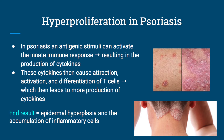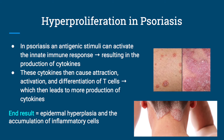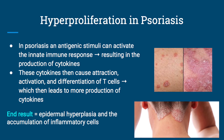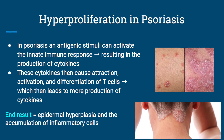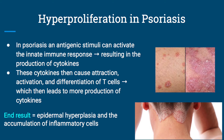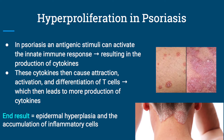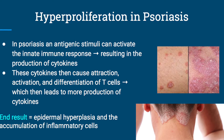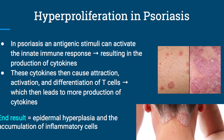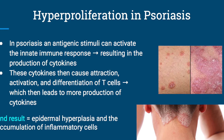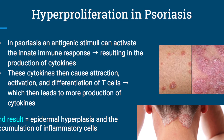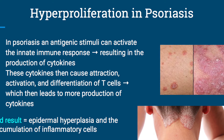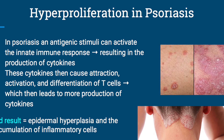The hyperproliferation in psoriasis can be activated by genetic or environmental factors, but also by antigenic stimuli — anything that produces or activates an immune response. Once your immune response is activated, that usually results in the production of cytokines and white blood cells. These cytokines then cause the attraction, activation, and differentiation of T cells, which leads to more cytokine production — a positive feedback loop — ending with epidermal hyperplasia and the accumulation of inflammatory cells. Some of the cytokines involved include interleukin-23, interleukin-12, or tumor necrosis factor, produced by macrophages, dendritic cells, and neutrophils.